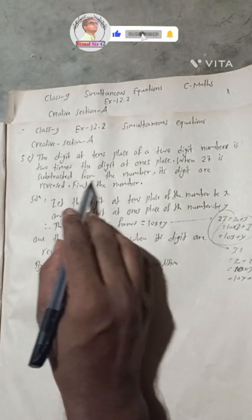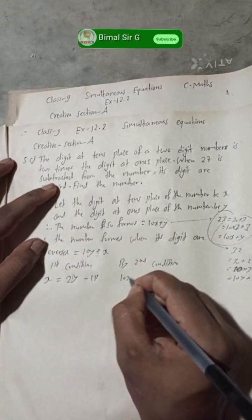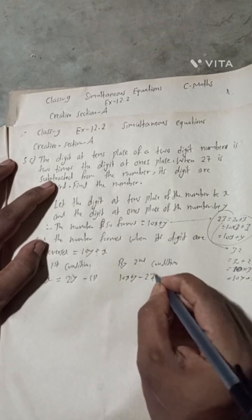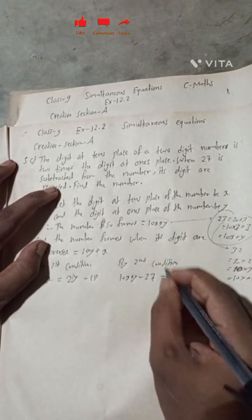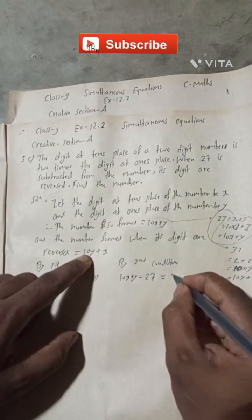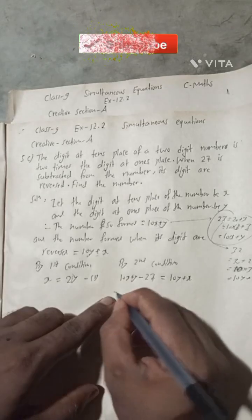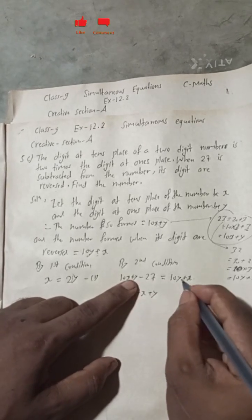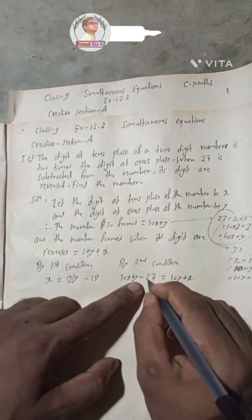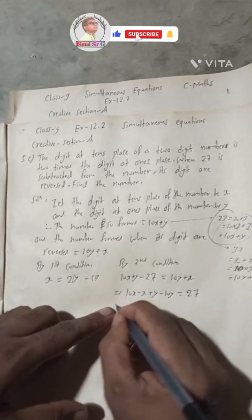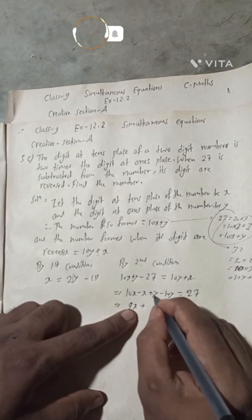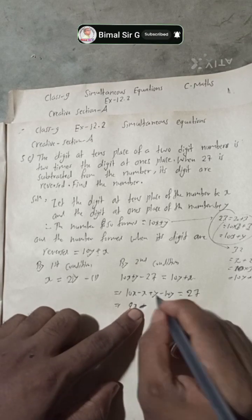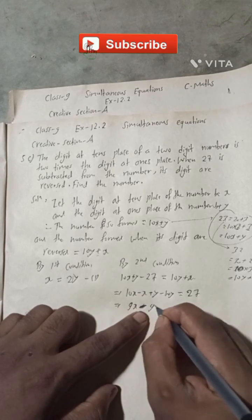By the second condition: when 27 is subtracted from the number, its digits are reversed. So: 10x + y − 27 = 10y + x. Rearranging — bringing x terms to one side and y terms to the other — we get 10x − x plus y − 10y equals minus 27, which gives 9x minus 10y minus y.